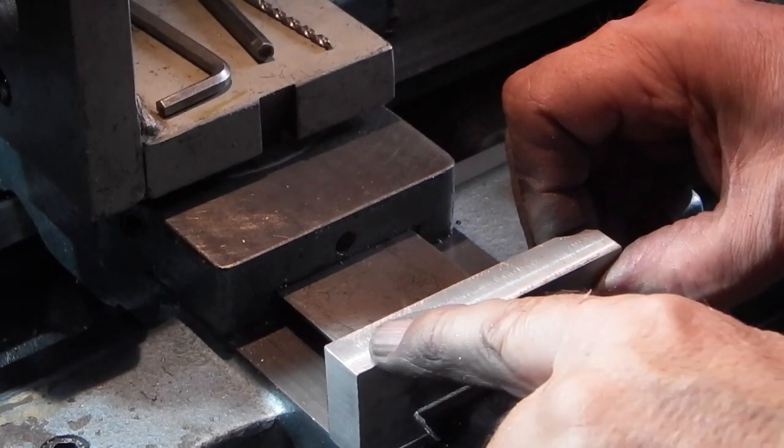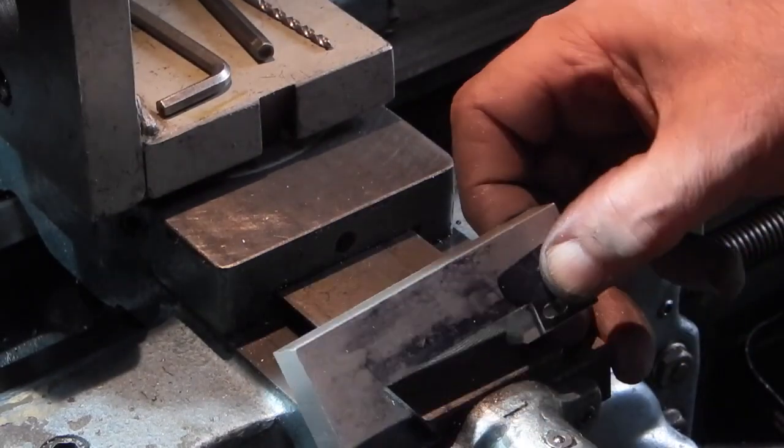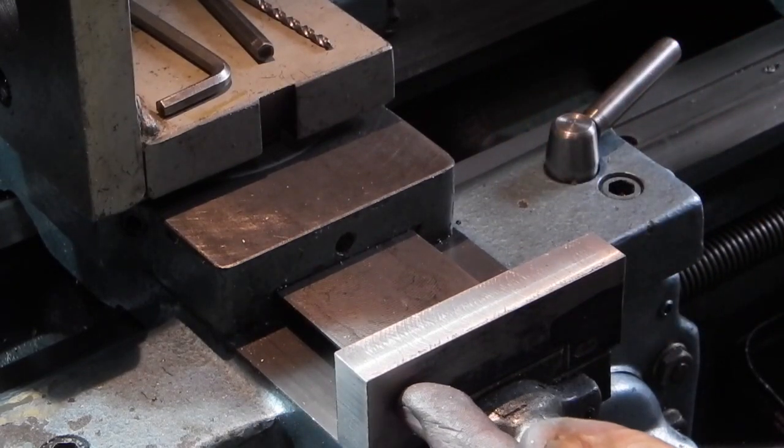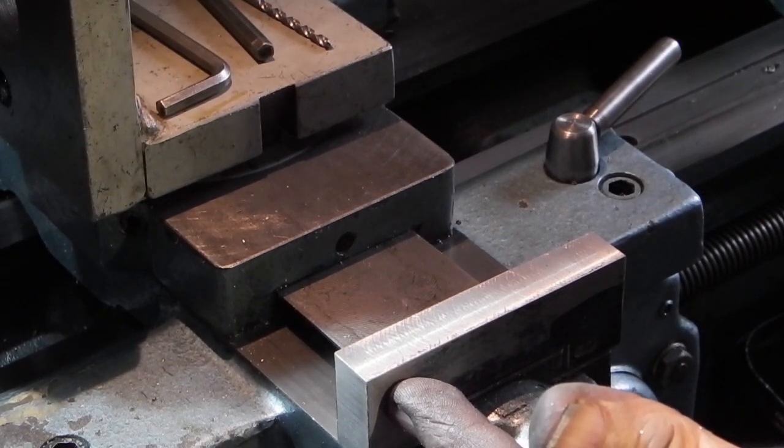You can either leave this square on the top or take the edges off, it's up to you. I think I'll leave it for the moment because I might be able to drill a hole through here to fix the dial indicator, so I can actually use it for other things.